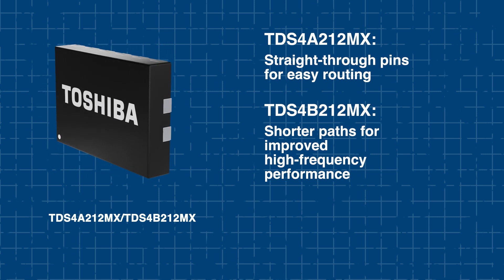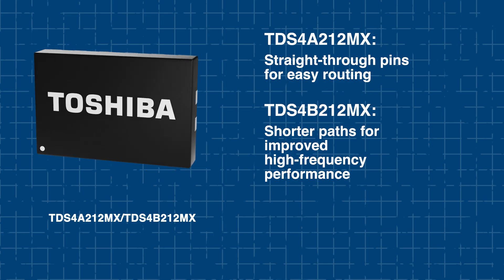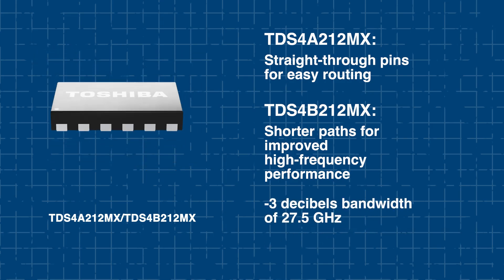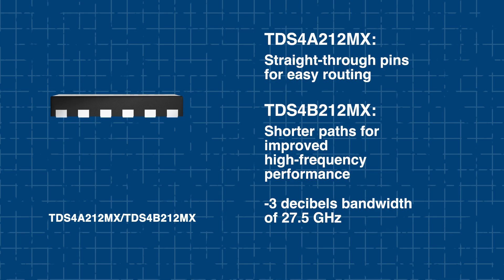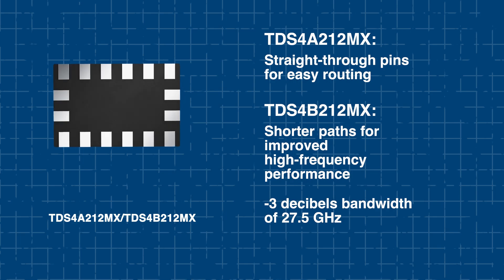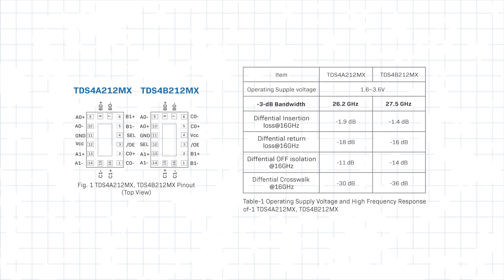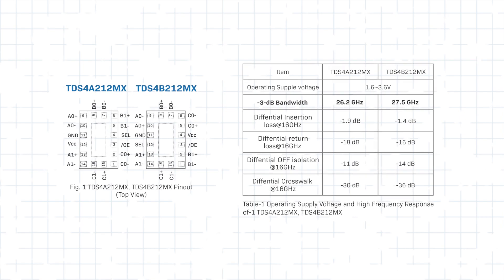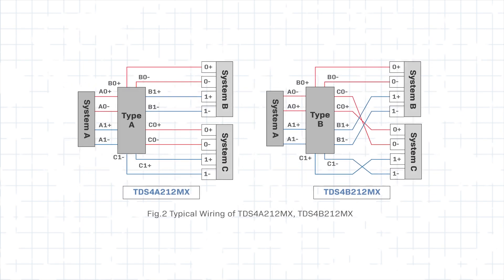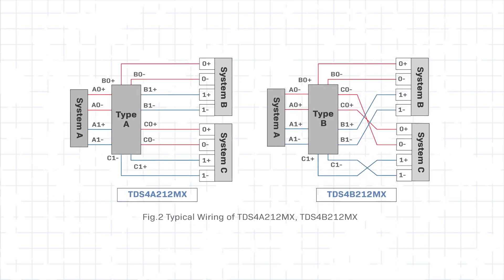The TDS4B delivers a negative 3 dB bandwidth of 27.5 GHz with low insertion loss and minimal return loss. Its excellent crosstalk suppression ensures cleaner signal transitions, which is essential for PCIe 5 and USB 4 systems. You can see from the graph the comparison of their supply voltage and signal compatibility, while this diagram illustrates the typical wiring for each. Your choice should depend on board layout needs and high-frequency performance targets.